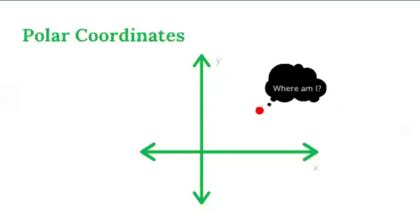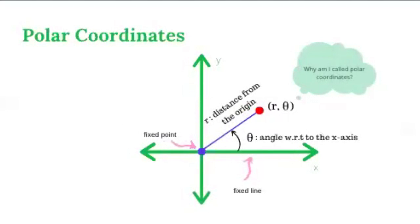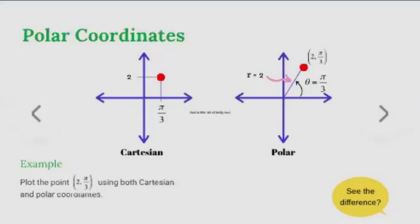Knowing the right references will help you plot a point in the Cartesian coordinate system in 2D and 3D, and that is exactly what you need to plot a point in the polar, cylindrical, and spherical coordinate systems. Using polar coordinates is another way of locating a point on a plane. Unlike Cartesian coordinates, the polar coordinate system uses a fixed point and a fixed line as references. The fixed point is a reference for linear distance, while the fixed line is a reference for the angular distance of the given point. For example, the point (2, π/3) in polar coordinates means the point is 2 units from the fixed point and π/3 radians in a counterclockwise direction from the fixed line.